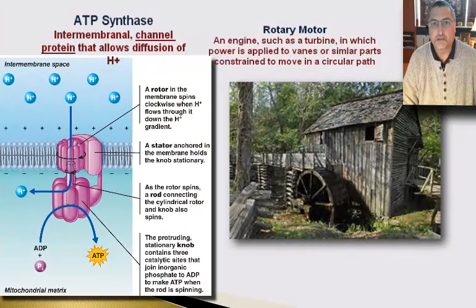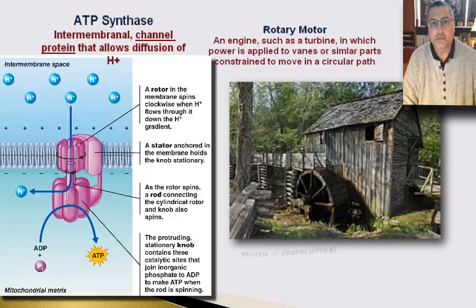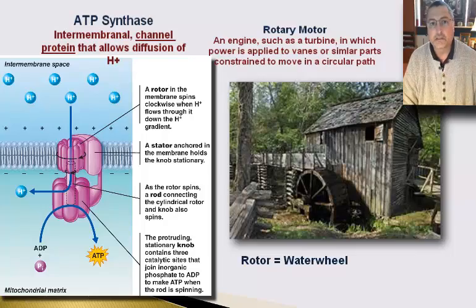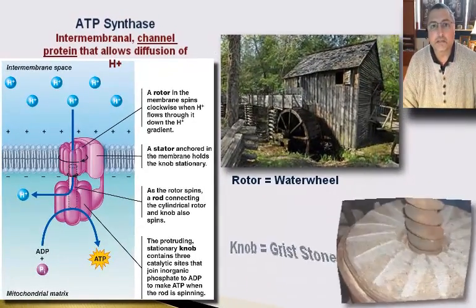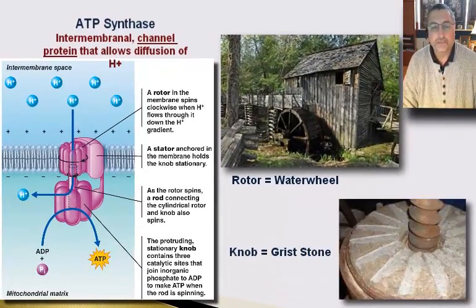It acts like the waterwheel on the gristmill at Cades Cove. If you recall that gristmill, they had a creek, and the water was caught by the waterwheel and it spun the waterwheel. When the waterwheel spun, it had a rod that drove a set of gears that took a griststone and ground corn.